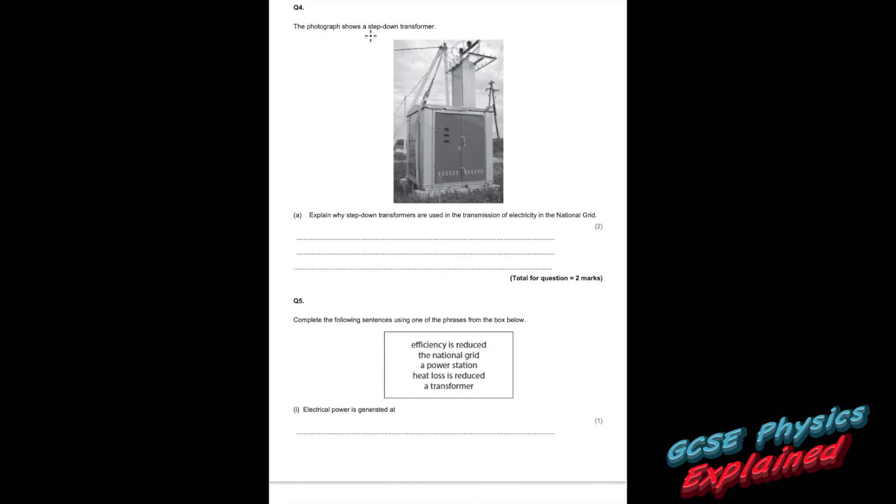Question four. The photograph shows a step down transformer. Just like I've just been explaining. Explain why step down transformers are used in the transmission of electricity in the national grid. Well, it's that last part that I've put up the top there. Step down transformers allow us to decrease the voltage near to people's homes so it's safer. There'll be less chance of electrocution.